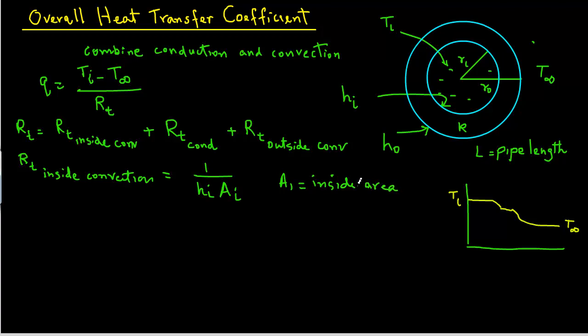Then the thermal resistance for conduction can be written as RT conduction equals natural log of Ro over Ri divided by 2π KL. Where L is the length of the pipe. Again, you want to look at the module before when we talked about conduction to see how we obtained this expression for the thermal resistance due to conduction.